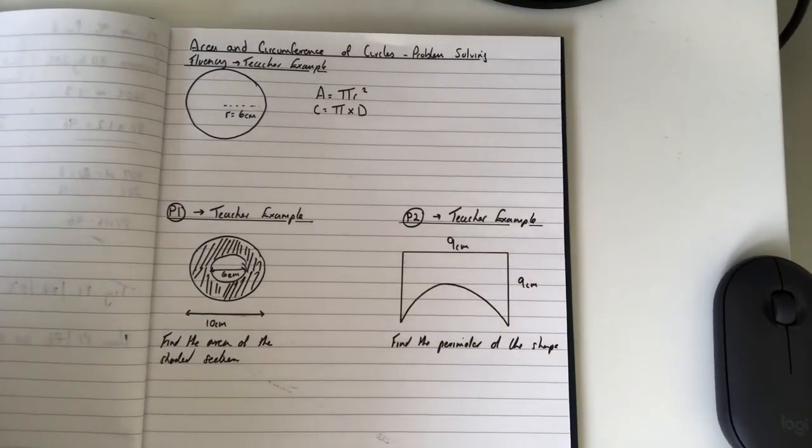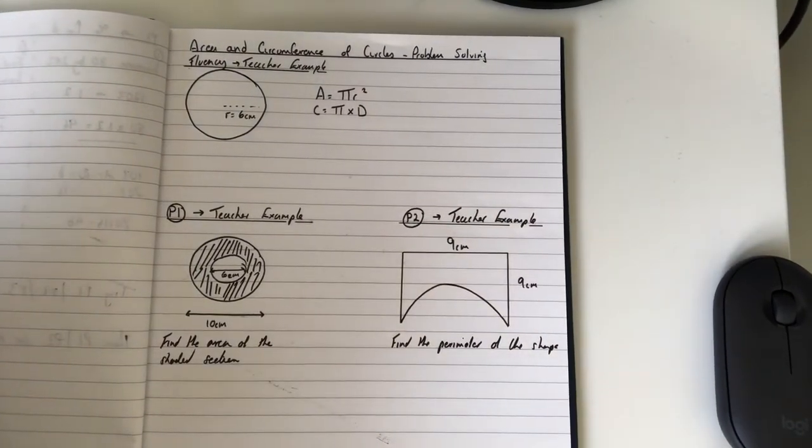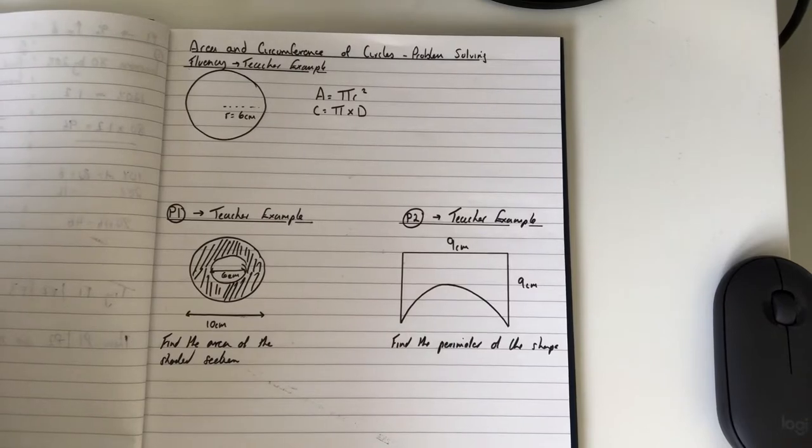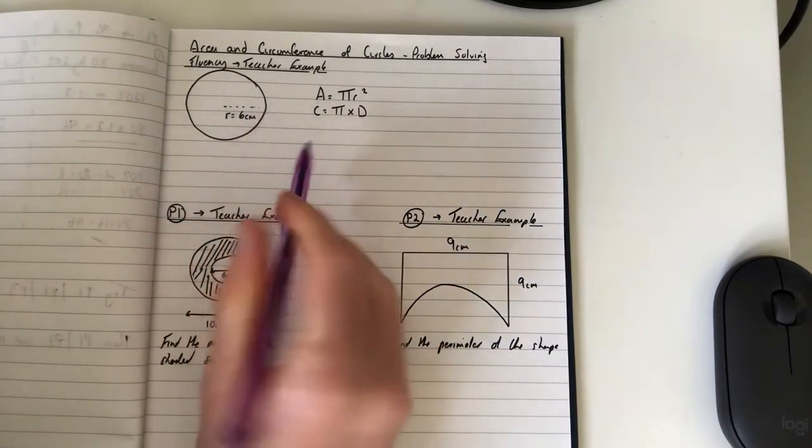On the mock, a lot of people got these circle questions wrong, so we're going to practice some problem solving, particularly mixed problem solving with area and circumference.